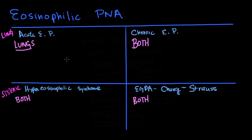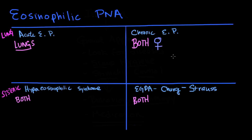The next thing to look at is gender predilection. Acute eosinophilic pneumonia is the unique one in terms of eosinophil location, whereas chronic eosinophilic pneumonia is the unique one in that it's typically found in females, whereas every other one is typically male predominant.